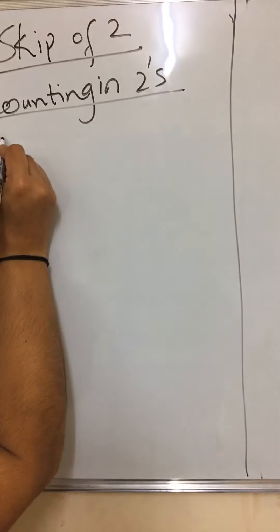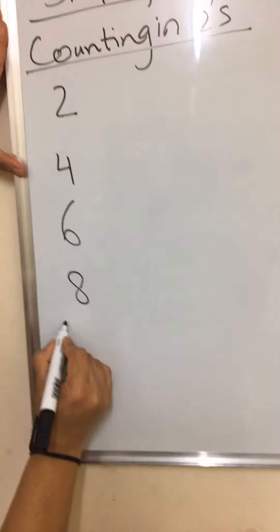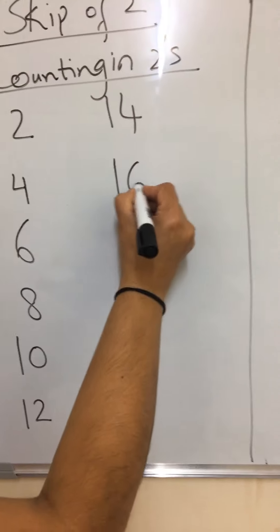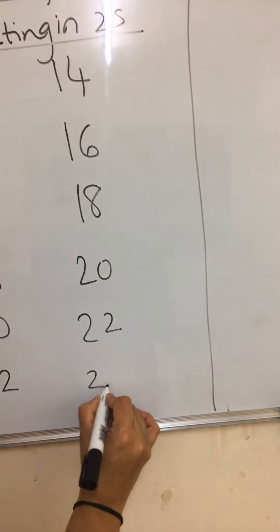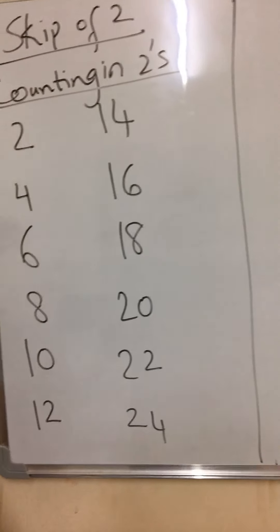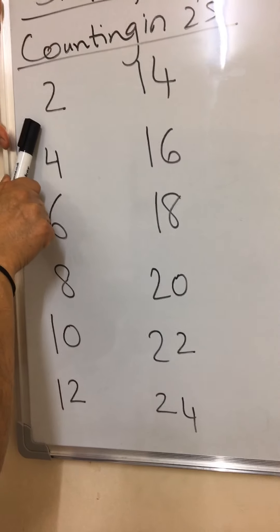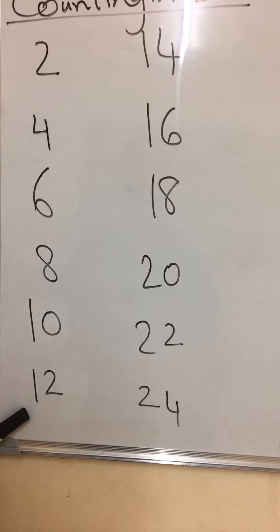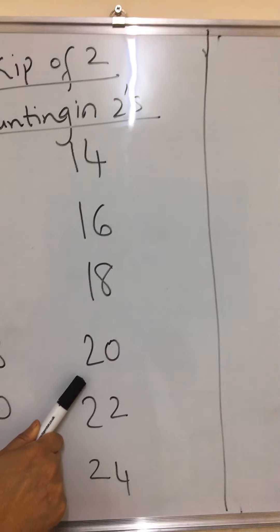So: two, four, six, eight, ten, twelve, fourteen, sixteen, eighteen, twenty, twenty-two, twenty-four. Let's do it again — skip of two, or counting in twos: two, four, six, eight, ten, twelve, fourteen, sixteen, eighteen, twenty, twenty-two, twenty-four.